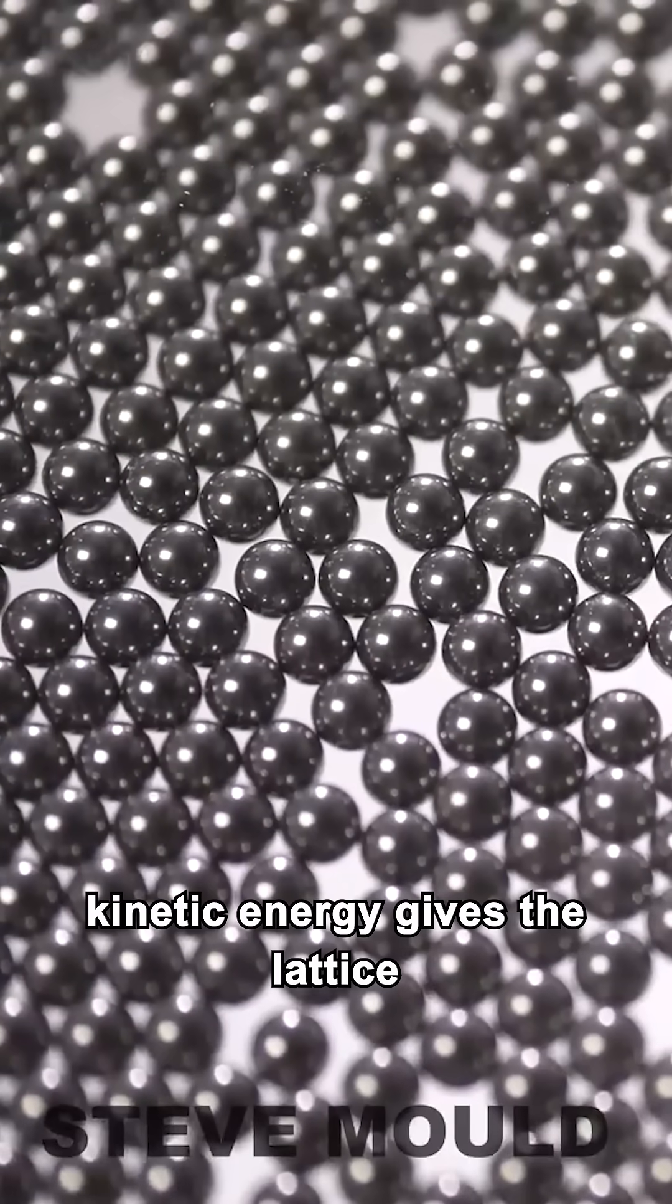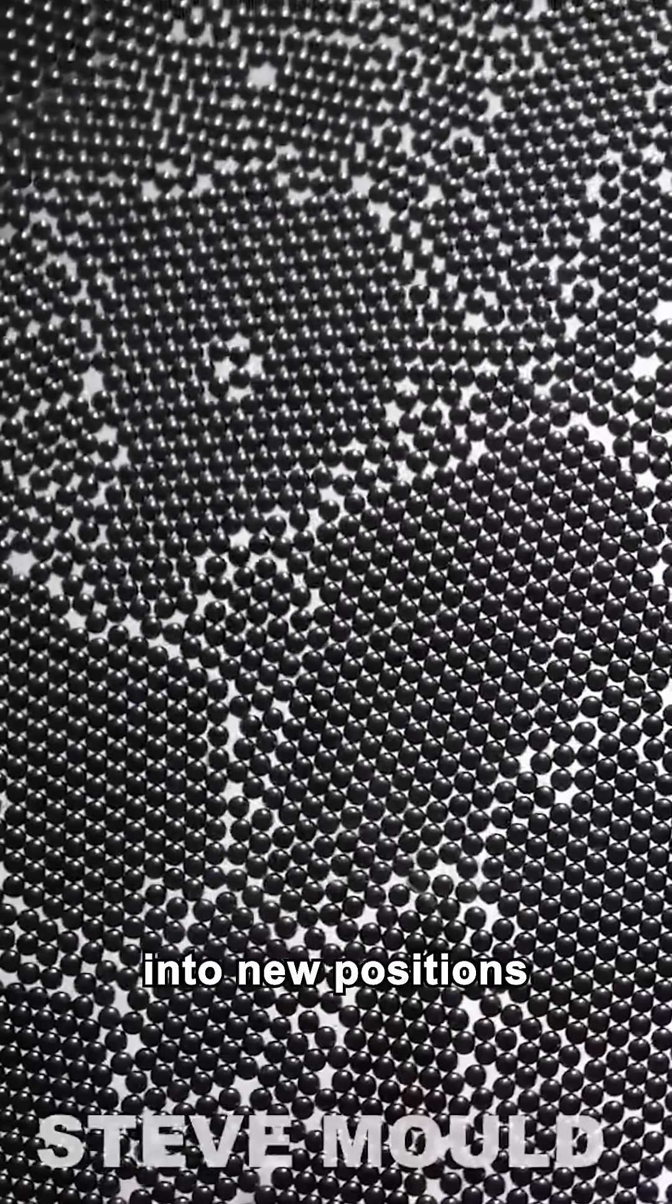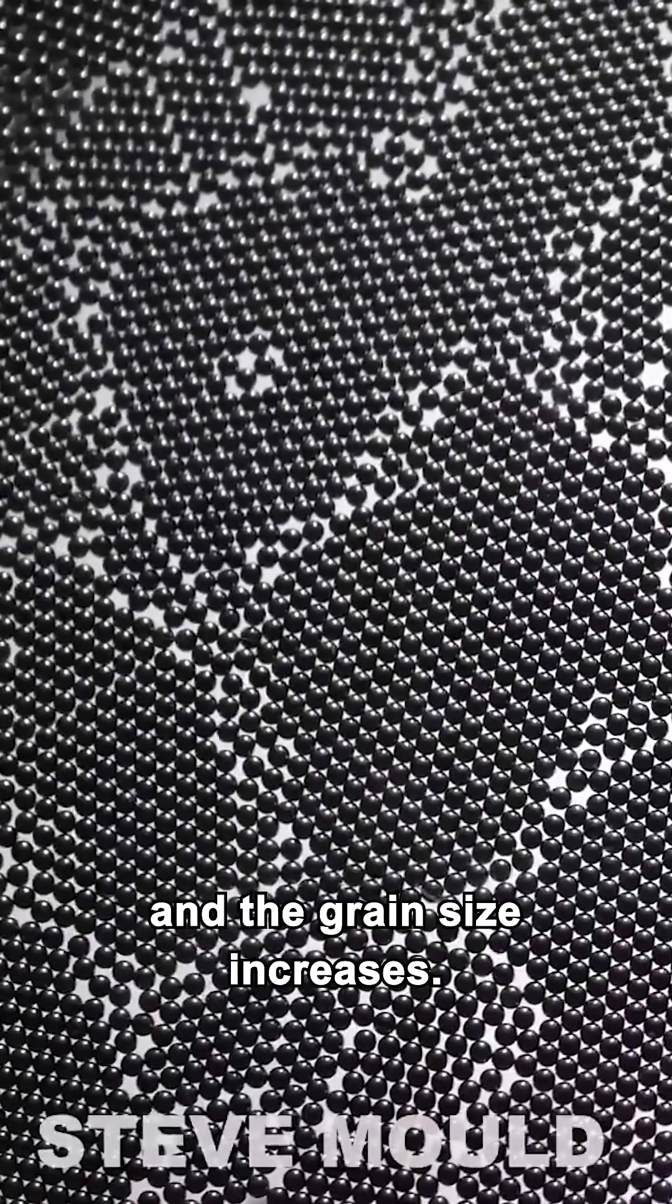You can see how the added kinetic energy gives the lattice an opportunity to rearrange itself. That extra movement means that the atoms can slip and slide into new positions, and the grain size increases.